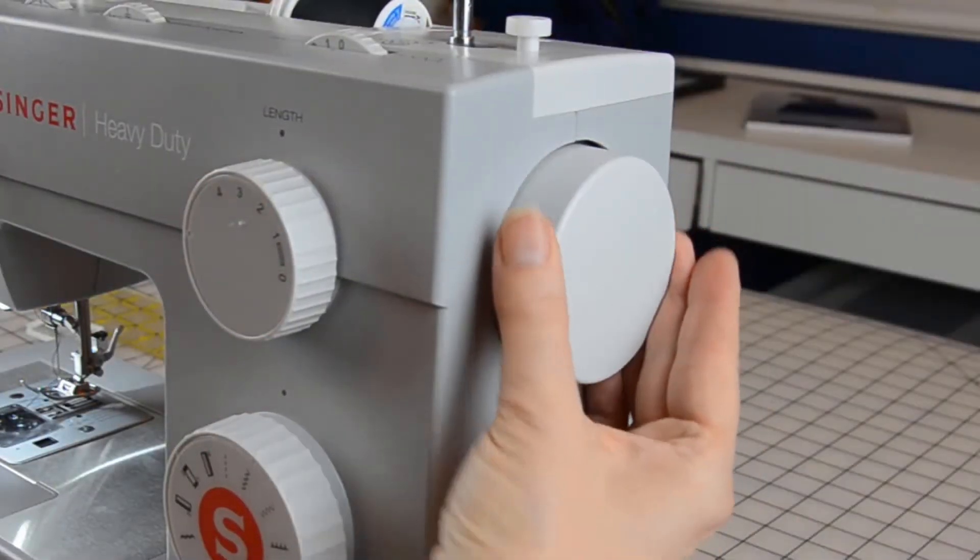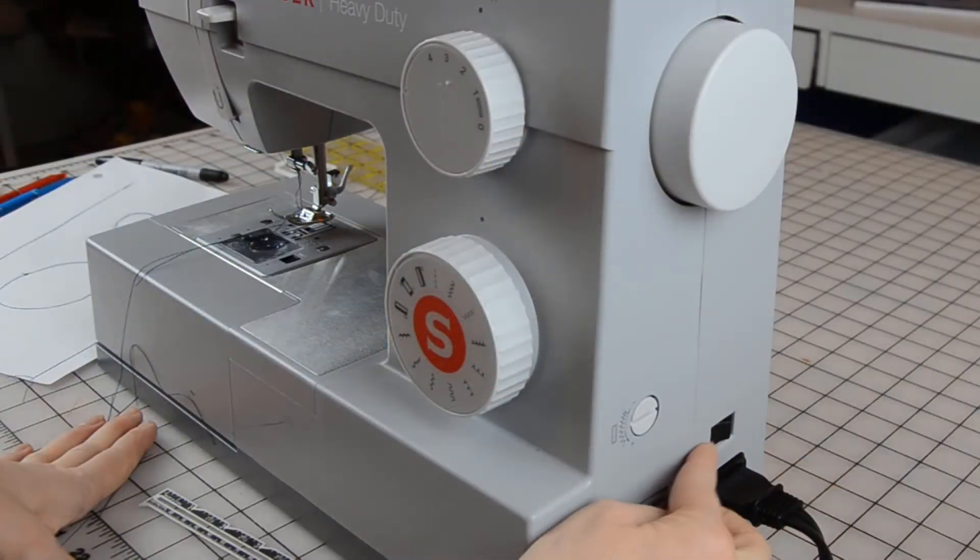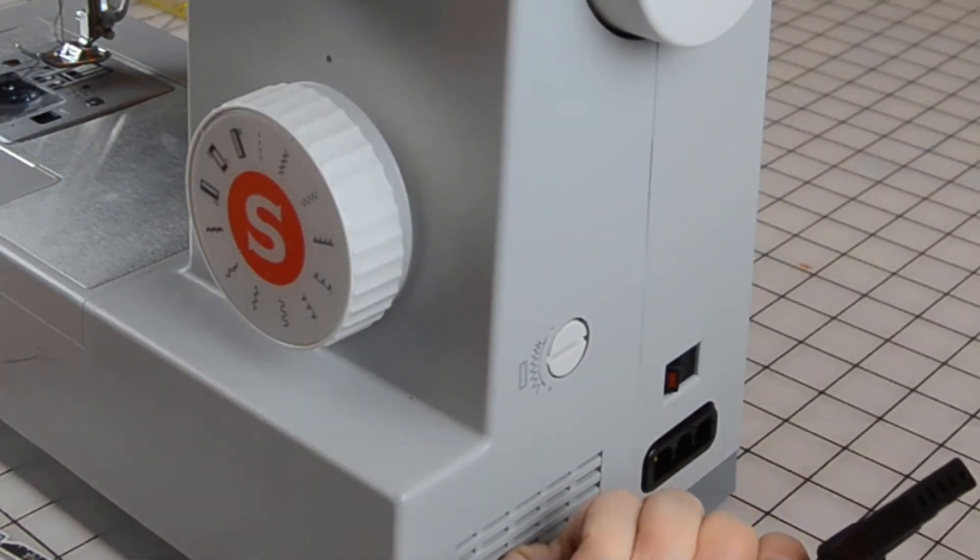The side of the machine has a knob that you will use to manually move the needle up and down into the fabric. The power switch, which also controls the light, is found here, as well as the power plug-in.